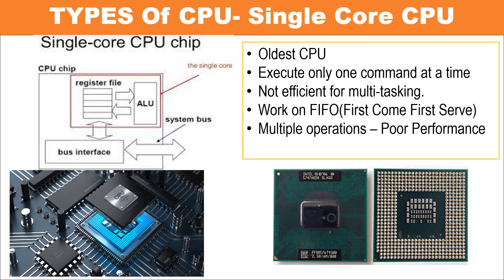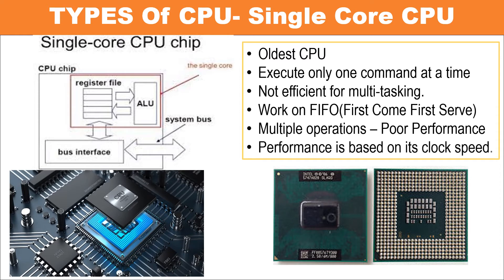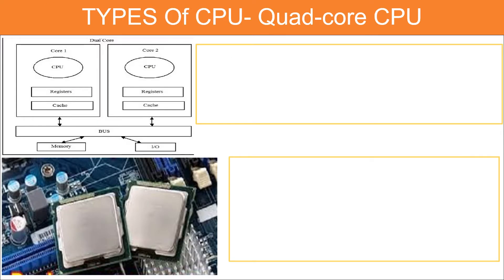But if multiple operation commands are given to a single core CPU, the performance of the computer is drastically reduced. The performance of a single core CPU is based on its clock speed.